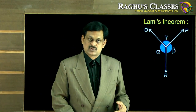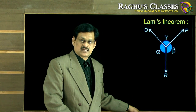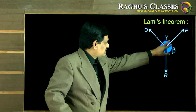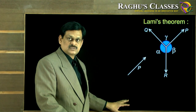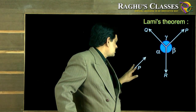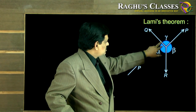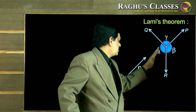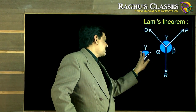According to the law of triangle of forces, these three forces can be represented by the three sides of a triangle taken in order, both in magnitude and direction. Taking the first force P, I draw an arrow representing its magnitude. To proceed to Q, I need to turn by angle gamma — the angle between P and Q — so I measure gamma from the direction of P.